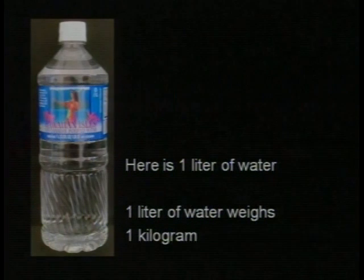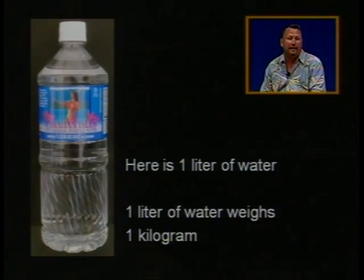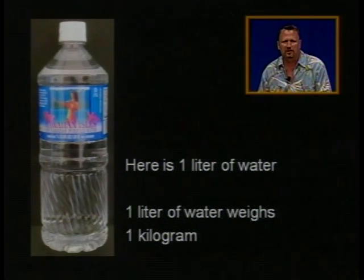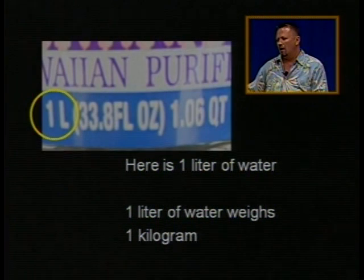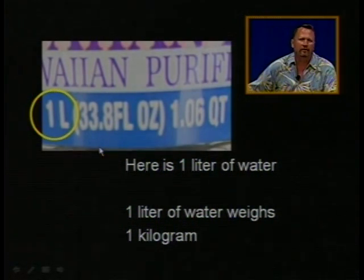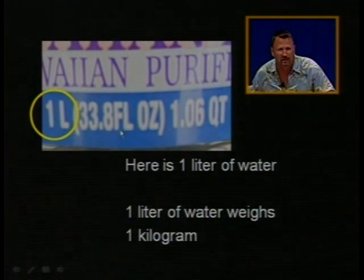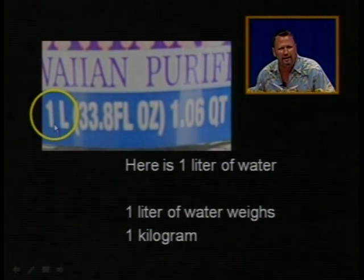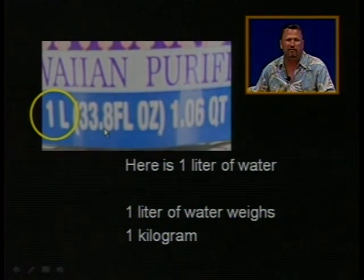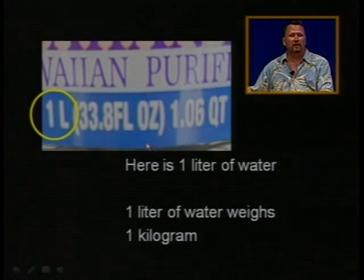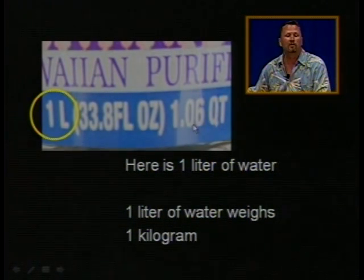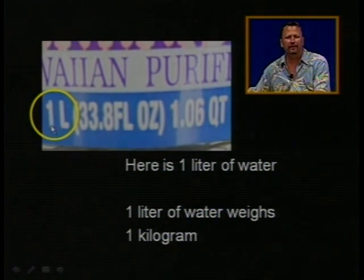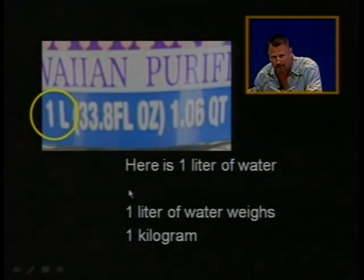So I showed you the one liter bottle of water. One liter of water weighs one kilogram, and this is where the metric system begins. Notice that this bottle says it has one liter, which is the same thing as 33.8 fluid ounces. But a liter is about one quart — 1.06 quarts. If you know what a quart is, you know just about what a liter is. And again, one liter of water weighs one kilogram.